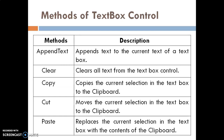These are the common methods of text box control. The first method is AppendText — it is used to append text to the current text of a text box. The second method is Clear — it clears all the text in the control. The third method is Copy — it copies the current value of a text box control. The next method is Cut — it moves the current selection in a text box to the clipboard. The last method is Paste — it replaces the current selection in a text box with the content of the clipboard.